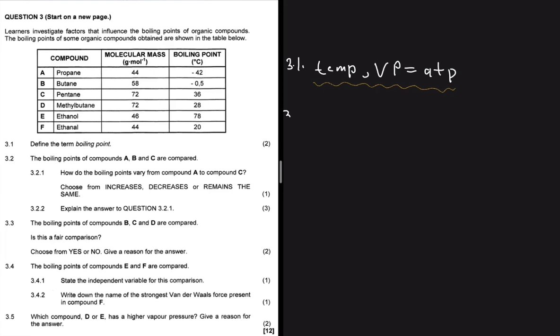Question 3.2 says the boiling points of compounds A, B, and C are compared. Question 3.2.1 says how do the boiling points vary from compound A to C? So we come in here from compound A going to C. So we have minus 42, minus 0.5, and 36. Clearly, the boiling points are increasing. So for 3.2.1, we're going to write increases.